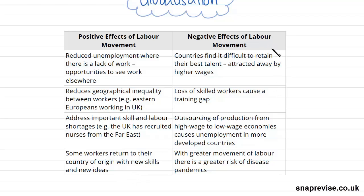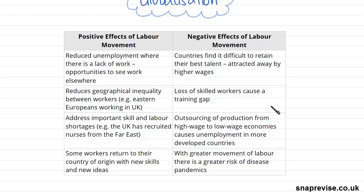However, there are negative effects. Countries find it difficult to retain their best talent, as the most skilled people are often attracted away by higher wages in more developed countries. This leaves behind the poorest and less skilled people in developing countries, and also leads to a loss of skilled workers, causing a training gap — if all the trained people move away, there is no one left to train those who are untrained.